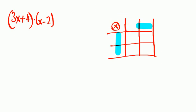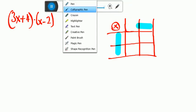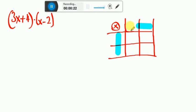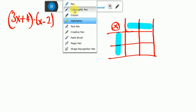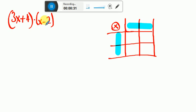I'm going to highlight this part and this part. I will get these two factors, 3x plus 4 and x minus 2, and I'm going to place them on the grid.